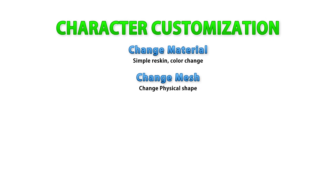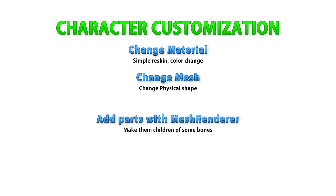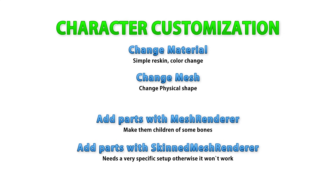So with just these two methods, you can already achieve quite a lot of customization variation. And then building on top of those, you have two more methods for adding parts to your characters. You can add parts using mesh renderers, or you can add parts using skin mesh renderers. The skin mesh renderer one is a tricky one — it can be quite hard to understand why it's not working. Let me know in the comments if you'd like to see a follow-up video building upon these basics with an actual working system, including save/load, UI buttons, and so on.